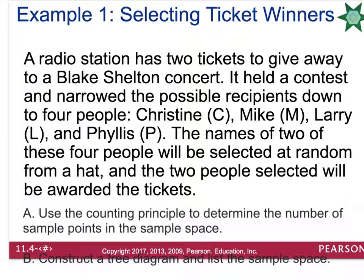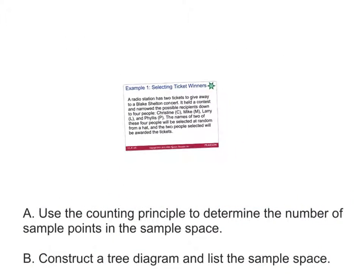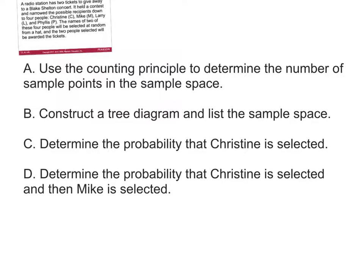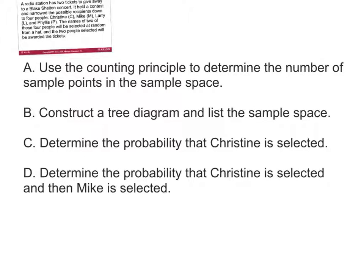Part A: Use the counting principle to determine the number of sample points in the sample space. Keep in mind there were originally 4 people with their name in the hat. One person's name was drawn and removed, which means on the second trial there are 3 people left. So if you multiply 4 times 3, your sample space is going to have 12 points in it.